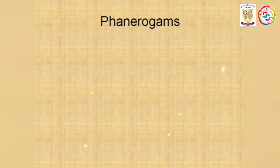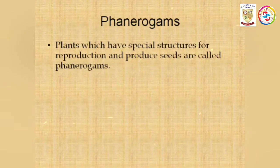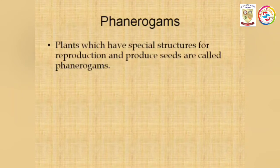Now let us see what are the characteristics of phanerogams. The plants which have special structures for reproduction — like a flower, which is a special structure for reproduction — and produce seeds are called phanerogams. Plants that produce seeds are called phanerogams.